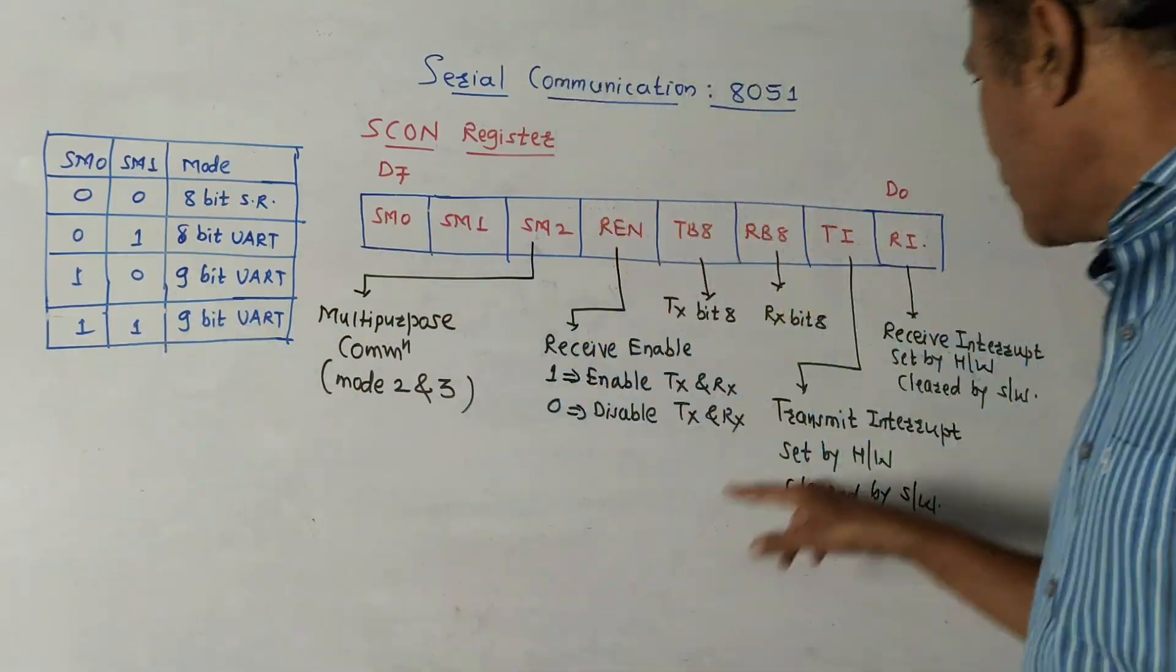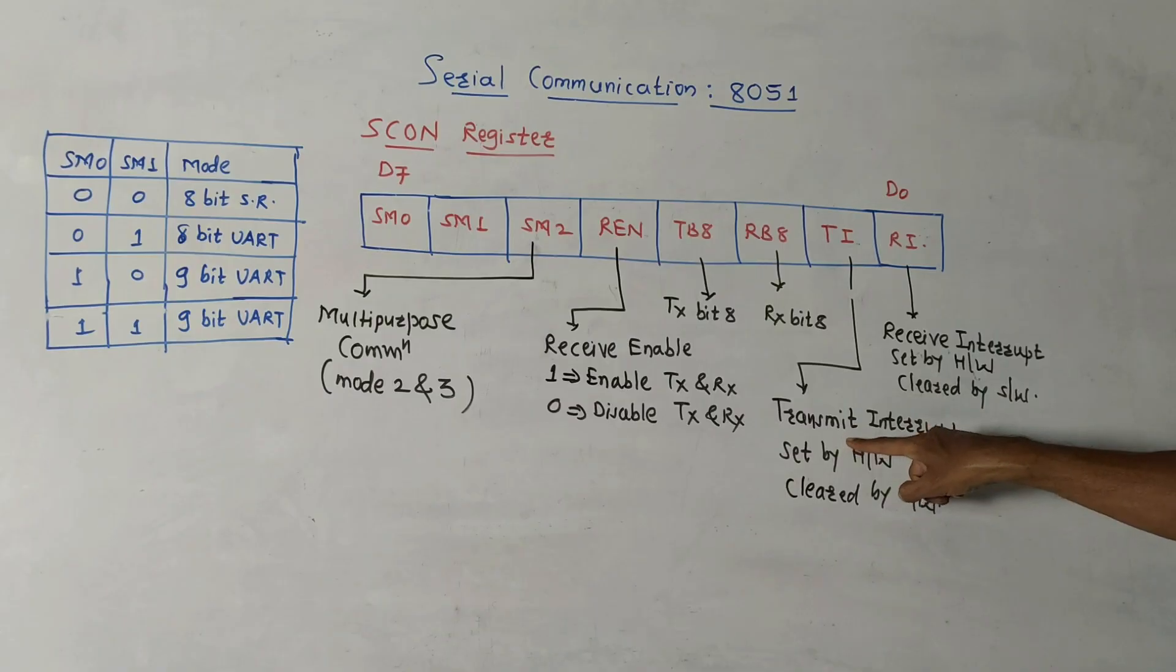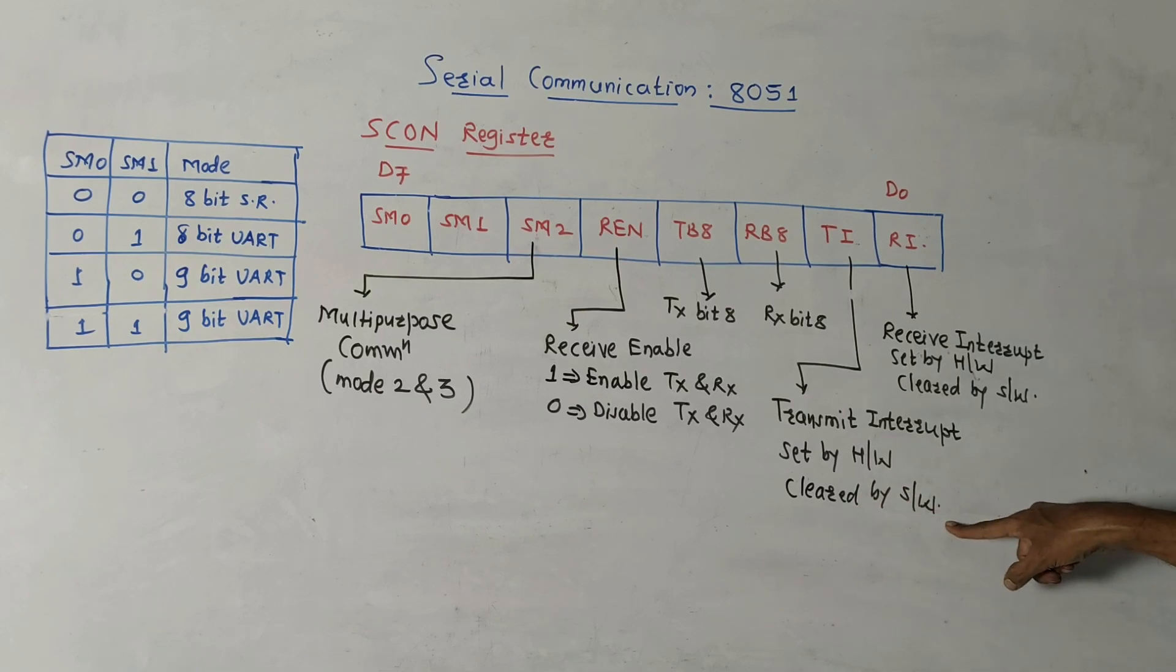TI stands for transmit interrupt bit. It is set by the hardware and it is cleared by using the software. RI stands for receive interrupt flag. It is set by hardware and it is cleared by the software.